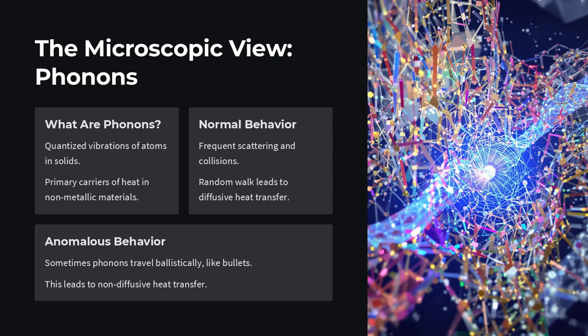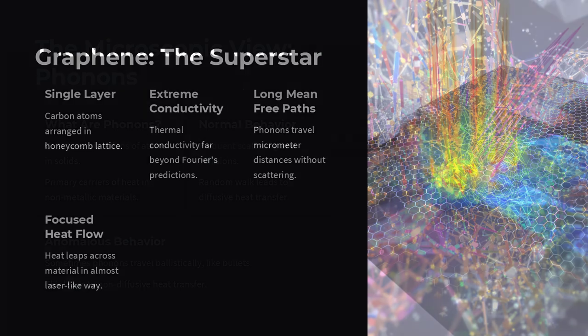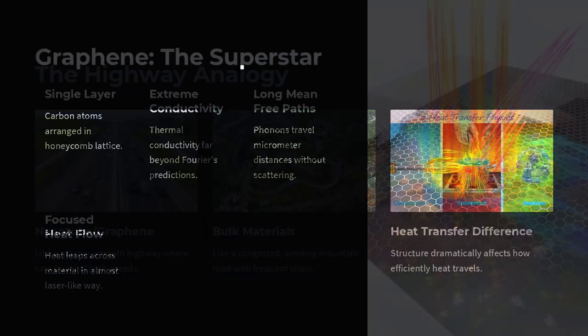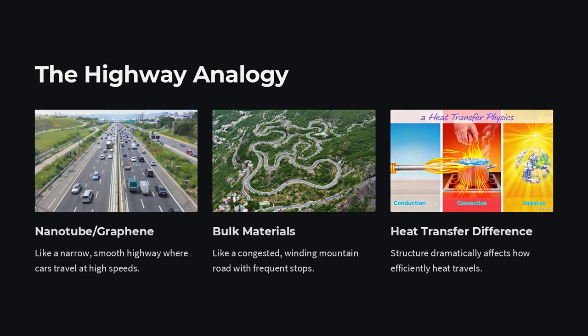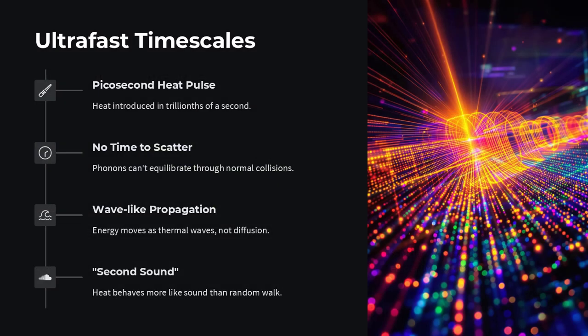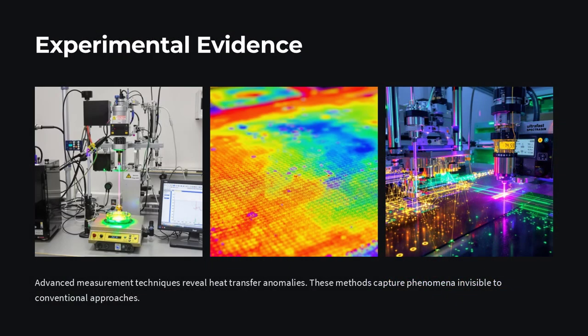But what if the phonons don't scatter as expected? What if they travel ballistically, like bullets, across the material without bouncing around? This happens in ultra-thin materials, nanowires, graphene, or at extremely low temperatures. Instead of diffusing, the heat carriers maintain their direction, zooming through the material like cars on an open freeway. This leads to non-local, wave-like, or even quantized heat flow. The classical diffusion model simply doesn't hold.